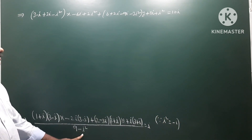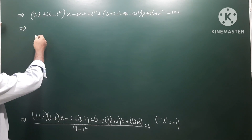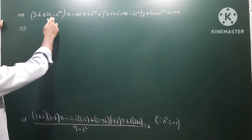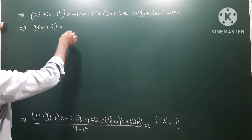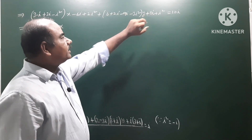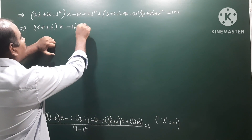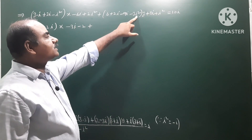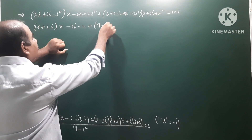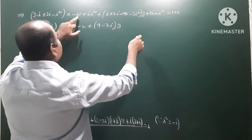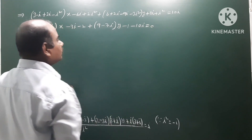9 + 1 = 10, so 10i on the right side. Expanding (2-3i)(3+i): 6 + 2i - 9i - 3i² = 6 - 7i + 3 = 9 - 7i. And i(3+i) = 3i + i² = -1 + 3i. So grouping: (4+2i)x + (9-7i)y + (-1+3i) - 10i = 0.